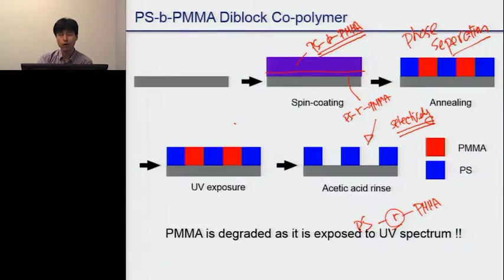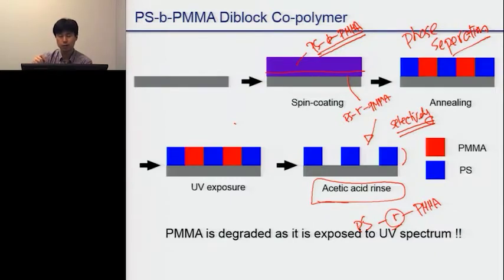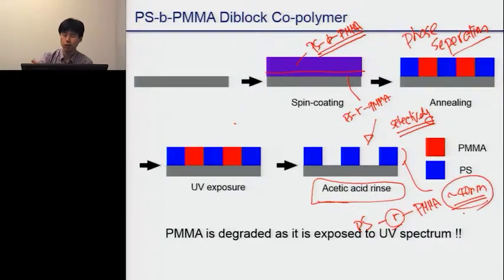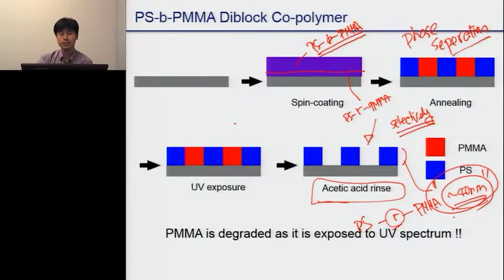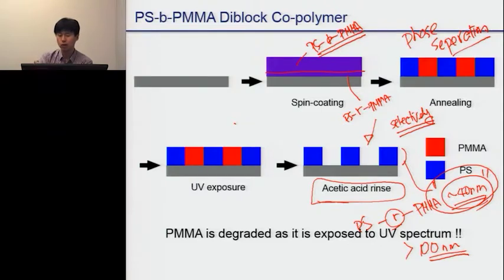But as we discussed in the previous lecture, the biggest problem we have after we achieve this kind of pattern is that the optimum thickness of the pattern is only around 40 nanometers. Compared with other technologies like e-beam lithography or nanoimprinting lithography, this thickness of the resist is kind of too thin, because other technologies offer thicker than 100 nanometers.